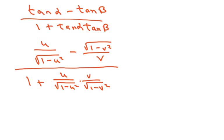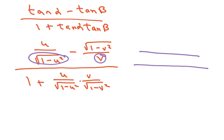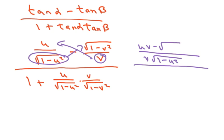For the numerator, I multiply the two fractions to get a common denominator of v times √(1 - u²). Combining them gives: uv minus √(1 - u²) · √(1 - v²), all over v · √(1 - u²).